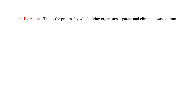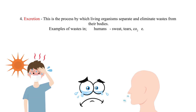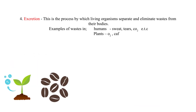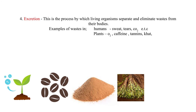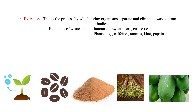Four: excretion. This is the process by which living organisms separate and eliminate wastes from their bodies. Examples of wastes in humans include sweat, tears, and carbon dioxide. In plants, examples include oxygen, caffeine, tannins, and papain.